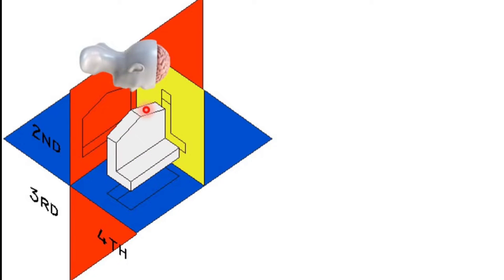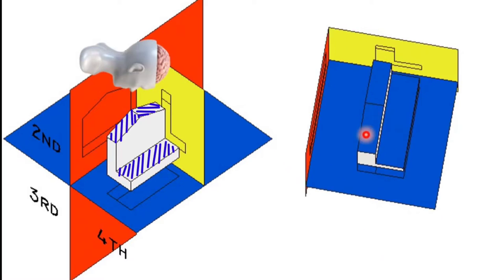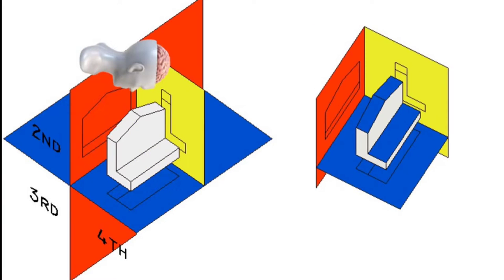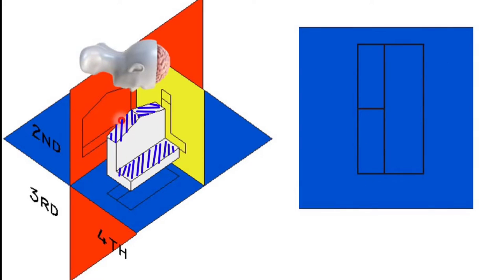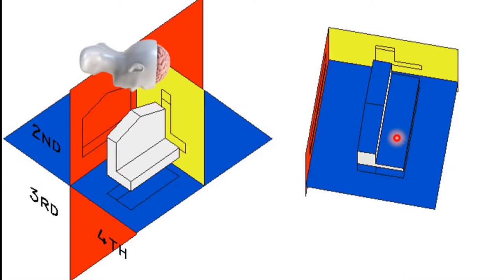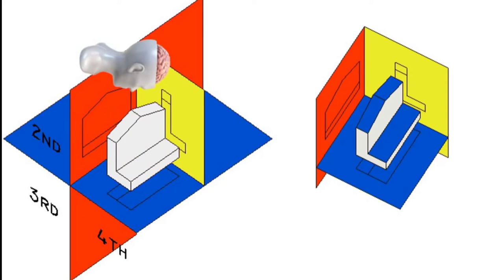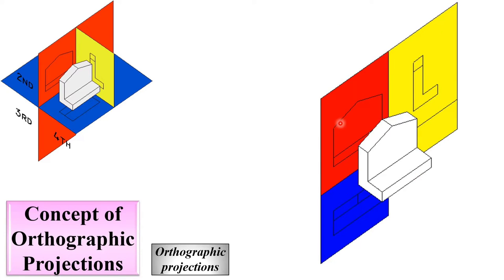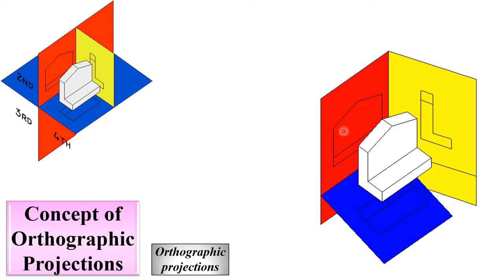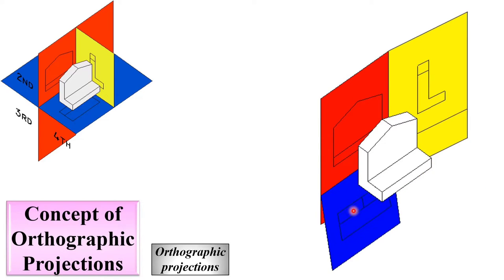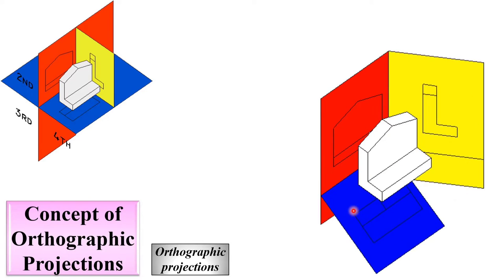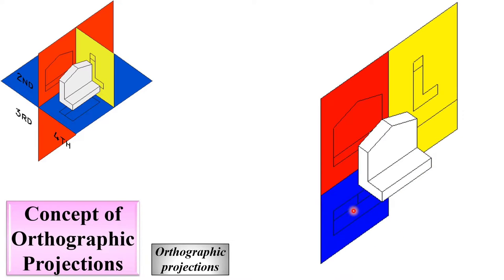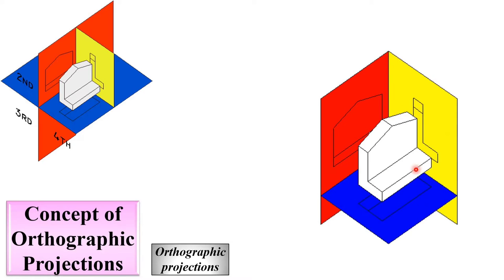In this direction, you can see this plane, this plane, and this plane also. It is represented by blue color — that is the top view. So, these are the three different views, and this is the relative position of the views according to the first angle projection method.